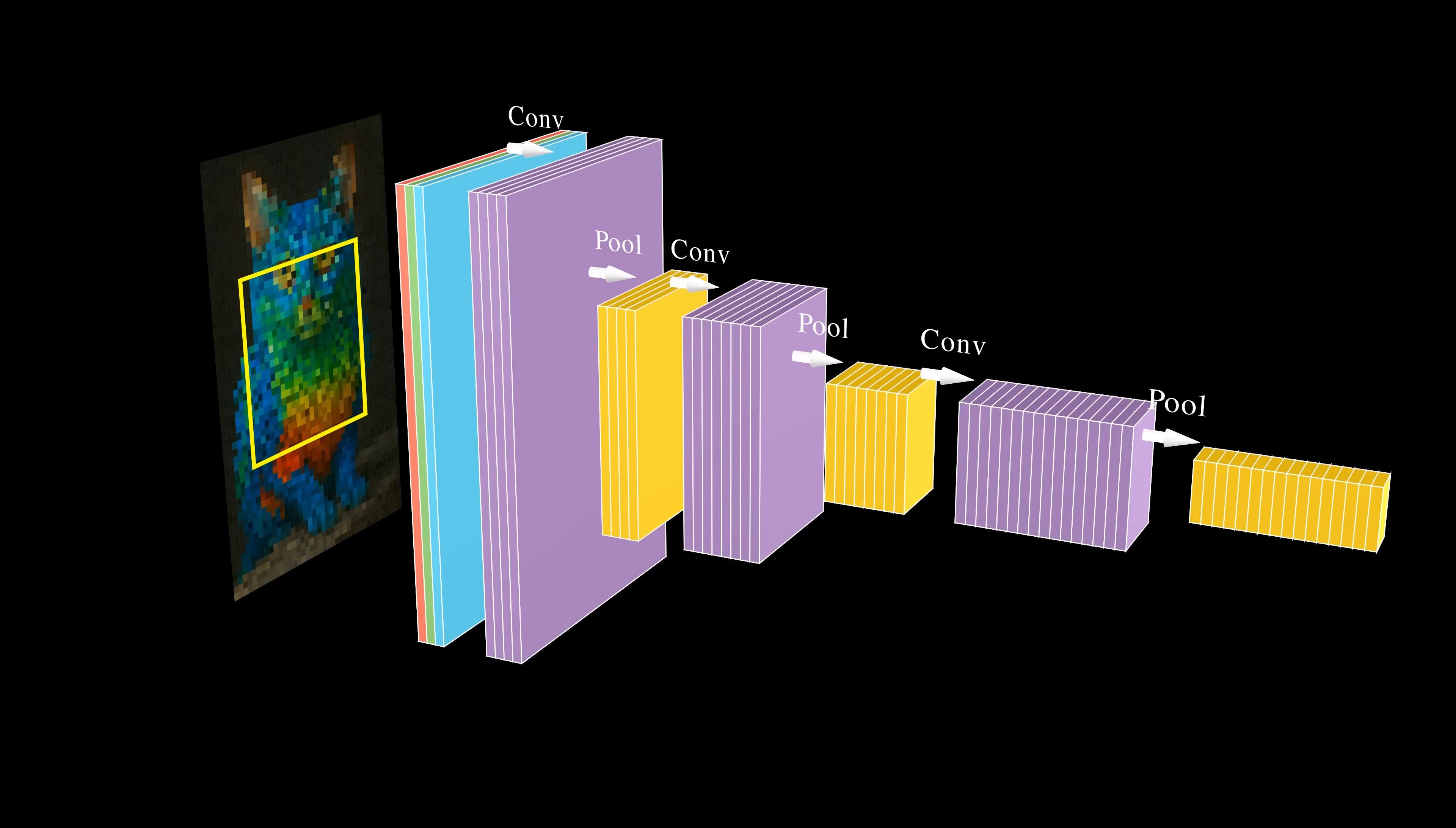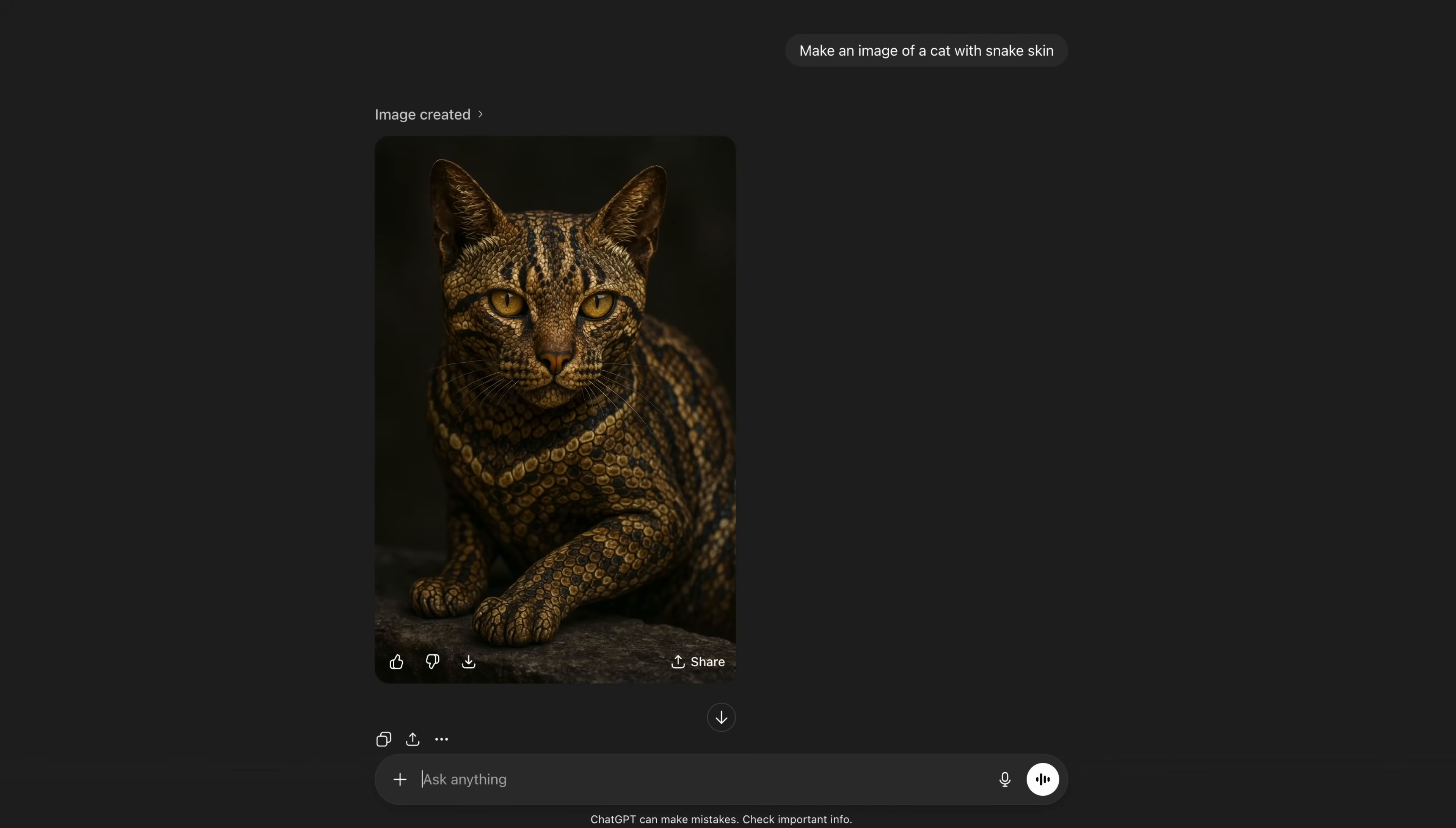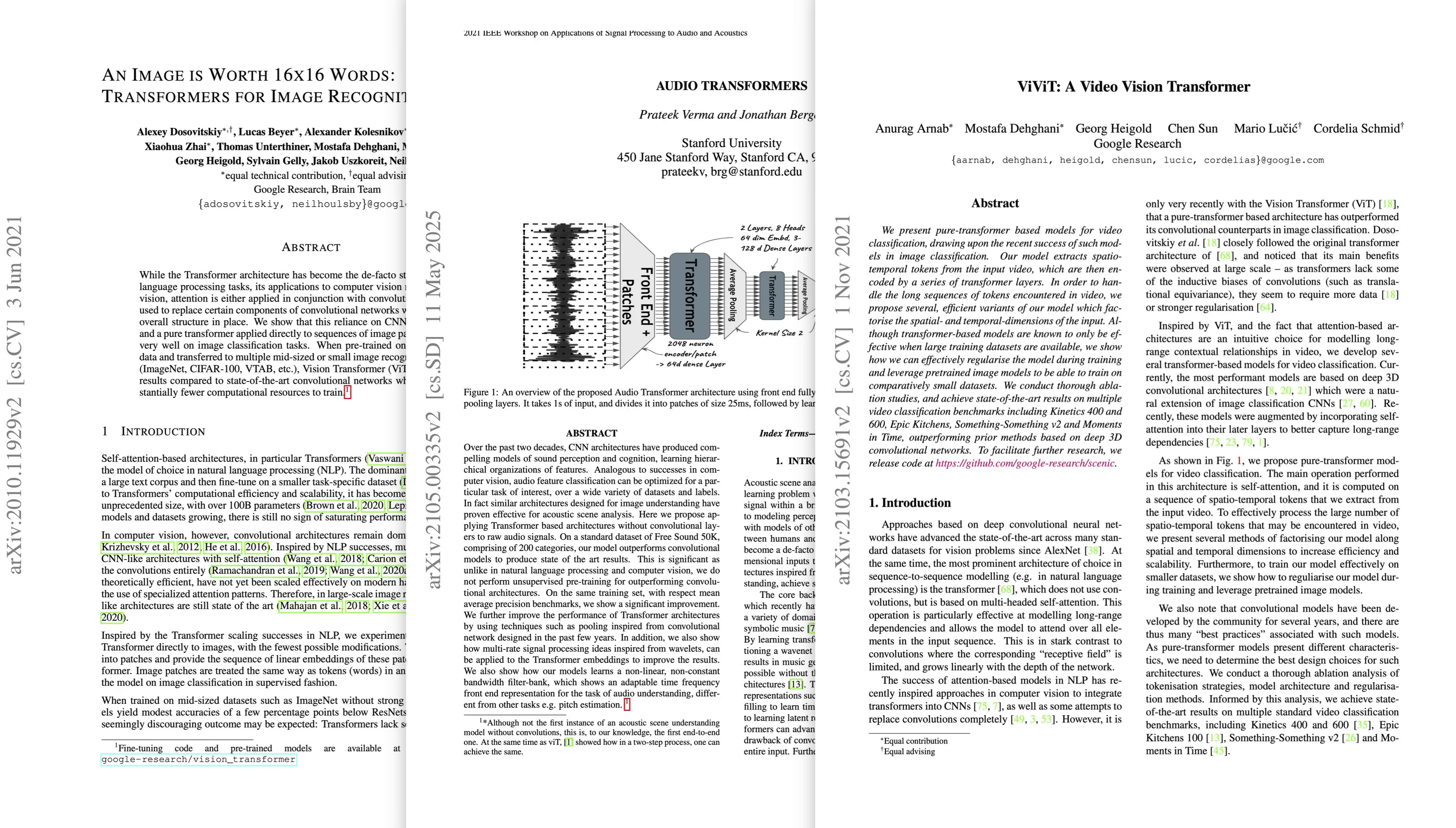The second force that propels Transformers is multi-modality. Modern models increasingly need to process text, images, audio, and video within a single system. CNNs have a strong inductive bias tailored to images, and that bias doesn't generalize well. Attempts to use CNNs for text never matched Transformers' performance. Self-attention, on the other hand, applies naturally across all modalities. A single Transformer architecture can treat all of them in a unified way. So the core idea is that attention can subsume convolution.